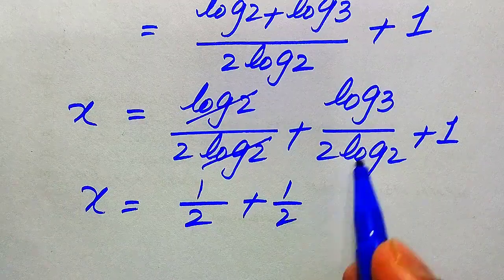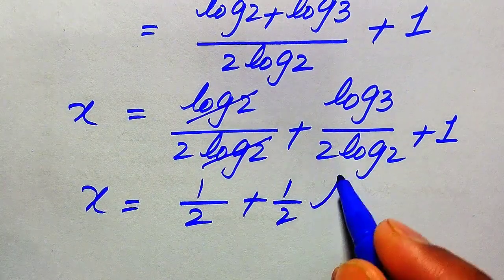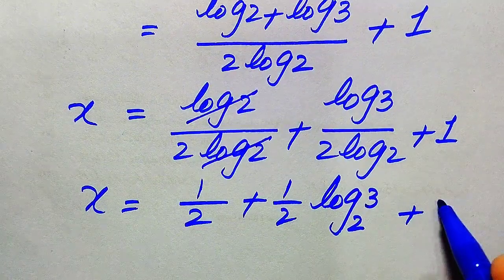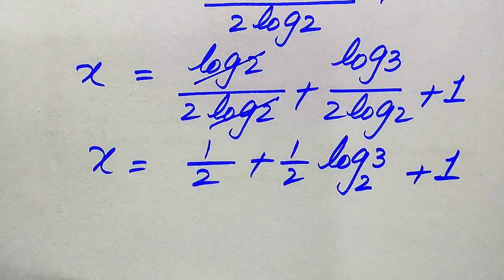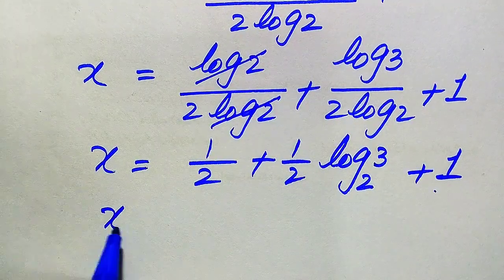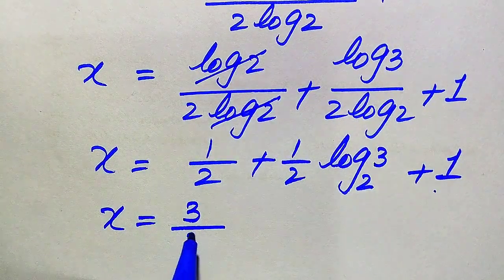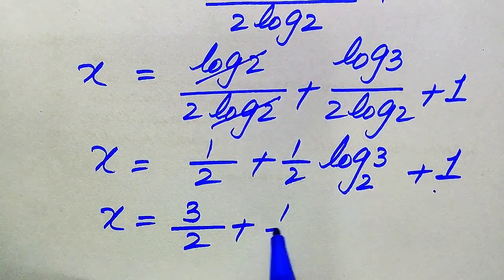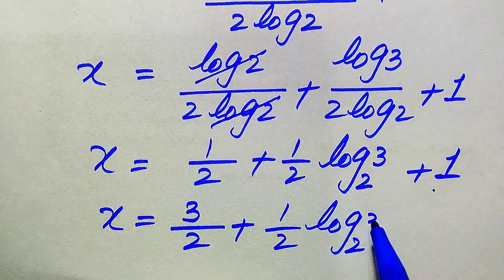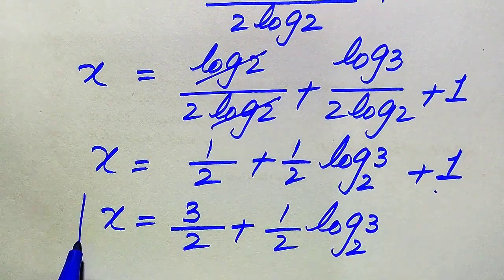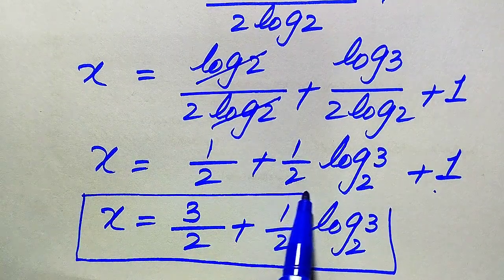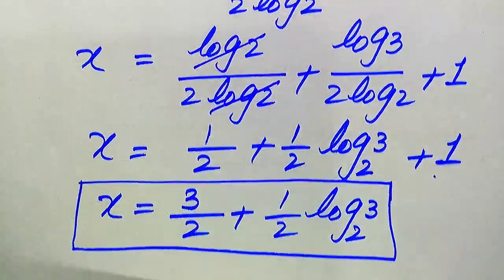The remaining two terms: 1 over 2, and log 3 divided by log 2 is written as log base 2 of 3. Then taking the LCM of 1 over 2 plus 1, it becomes 3 over 2. So x equals 3 over 2 plus 1 over 2 times log base 2 of 3.